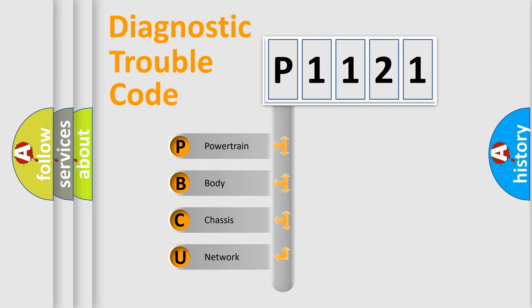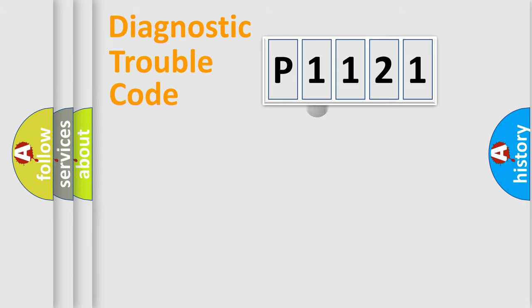We divide the electric system of automobile into four basic units: Powertrain, Body, Chassis, and Network. This distribution is defined in the first character code.